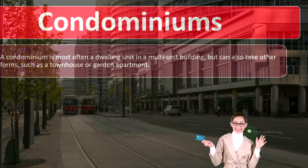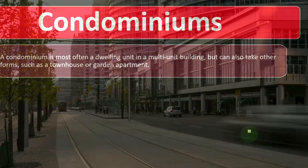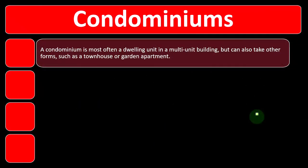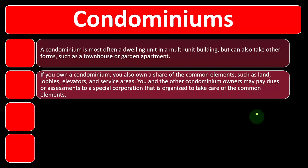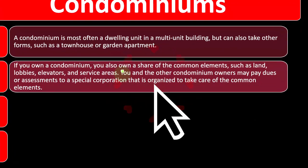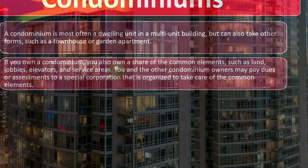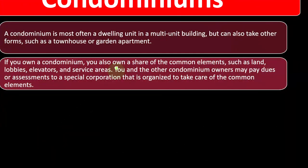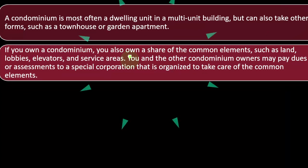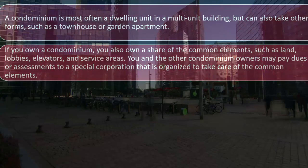A condominium is most often a dwelling unit in a multi-unit building, but can also take other forms such as a townhouse or garden apartment. If you own a condominium, you also own a share of the common elements such as land, lobbies, elevators, and service areas. Those common areas are owned in part by all the condominium owners, while you own your individual unit exclusively.